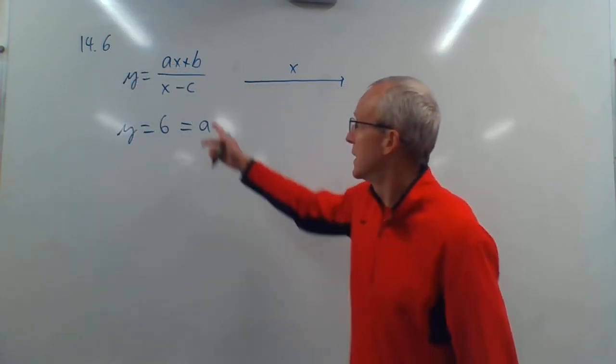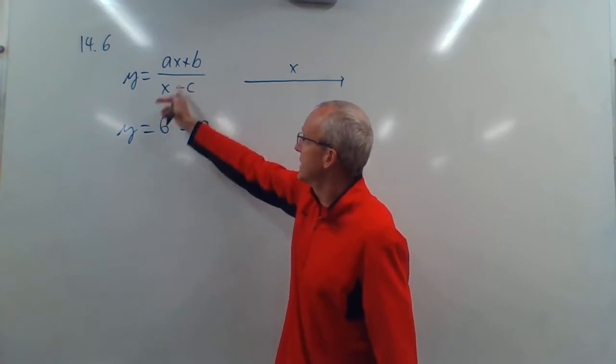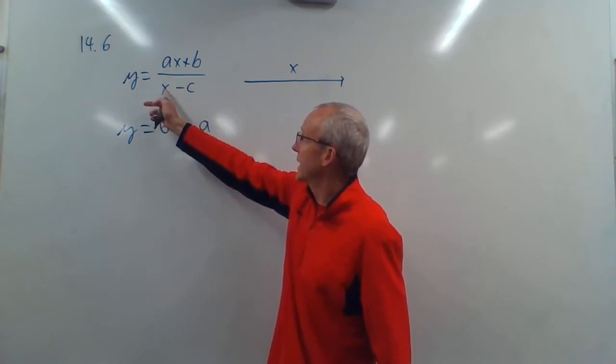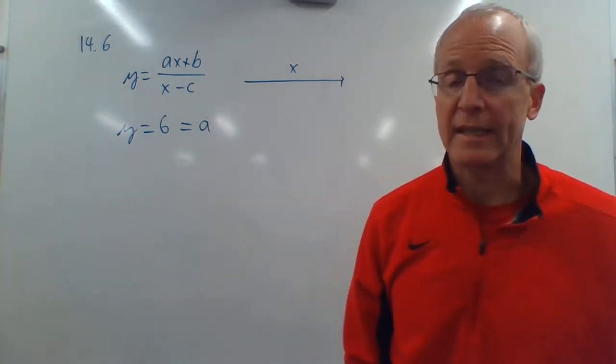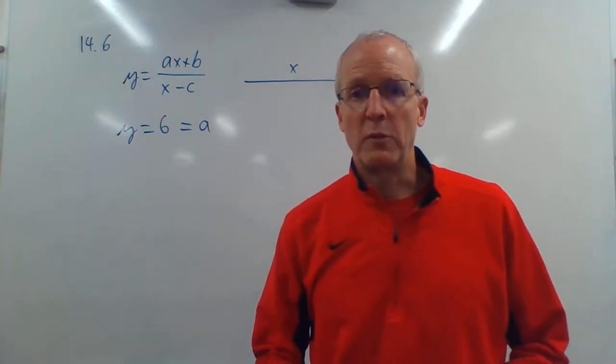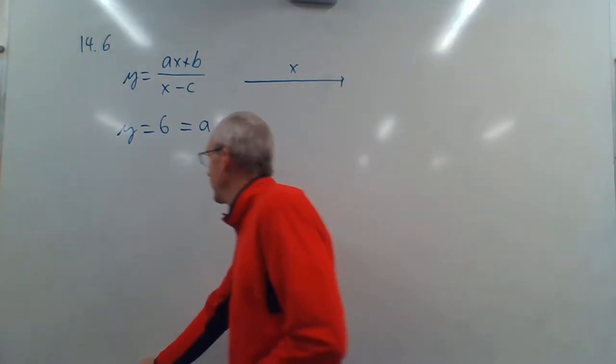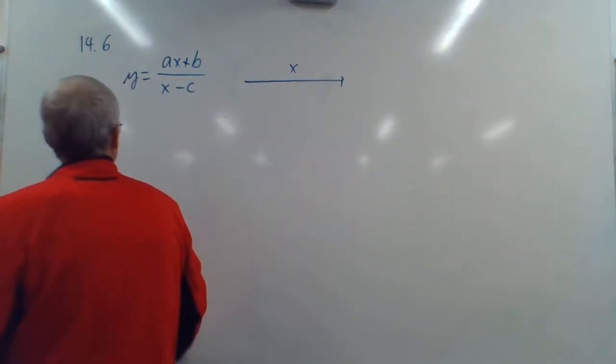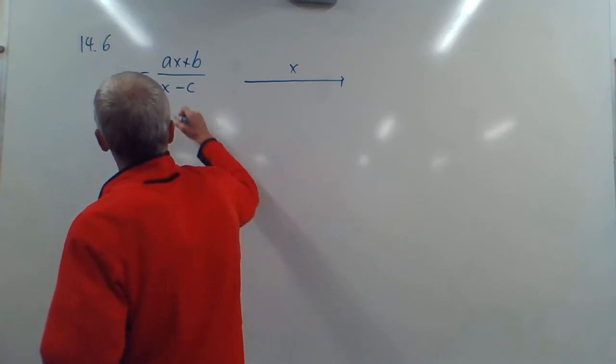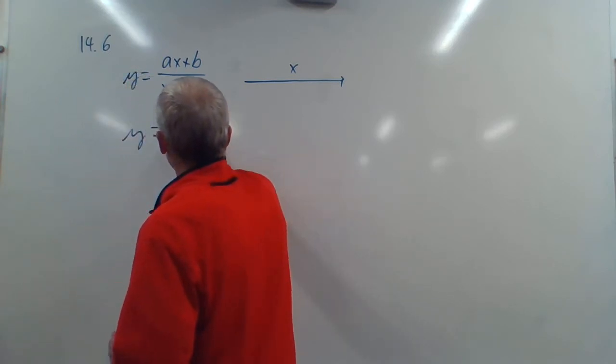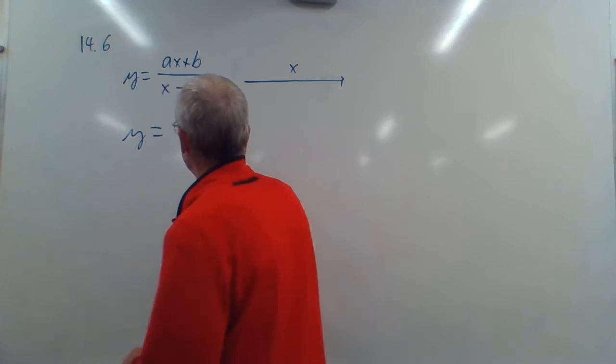So when they say that Y equals 6 is a horizontal asymptote, that means B and C don't matter. We have AX over X, so we end up with just A. So right away, we know that A is 6. That's great, because we know one of the letters. So right away, because they give us a horizontal asymptote, Y is equal to 6X plus B divided by X minus C.